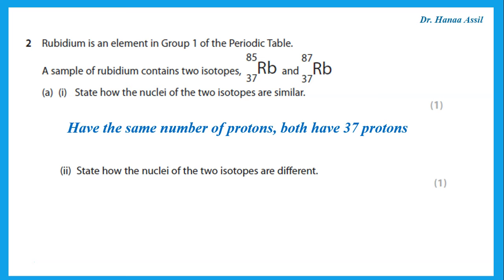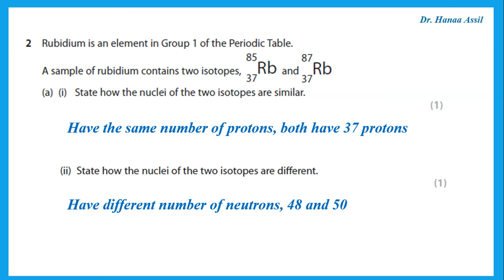Now state how the nuclei of the two isotopes are different. Remember, isotopes have the same number of protons but a different number of neutrons. How do we get the number of neutrons? It's the mass number minus the atomic number. So 85 minus 37 and 87 minus 37 — that means one of them has 48 neutrons and the other has 50 neutrons.